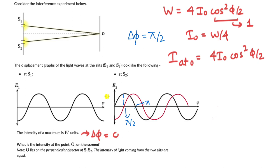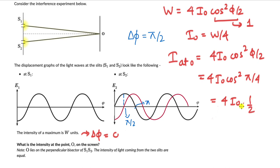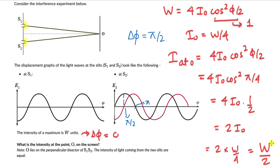There is no extra path difference to change the phase further. So plugging φ = π/2 into the formula: intensity at O = 4i₀ · cos²(π/4). Since cos(π/4) = 1/√2, we get cos²(π/4) = 1/2. So intensity at O = 4i₀ · (1/2) = 2i₀. Since i₀ = w/4, the intensity at O = 2 · (w/4) = w/2. The final answer is w/2.